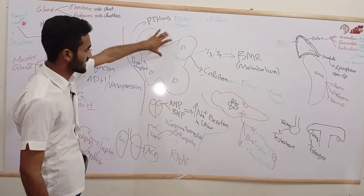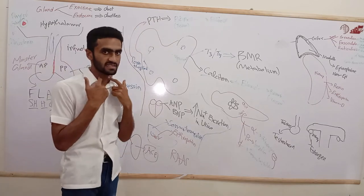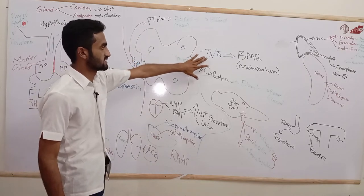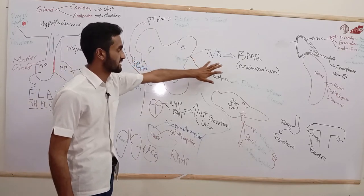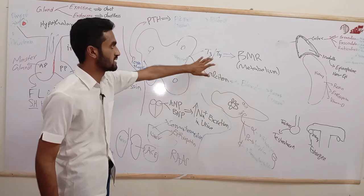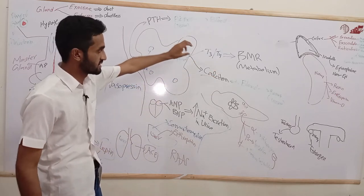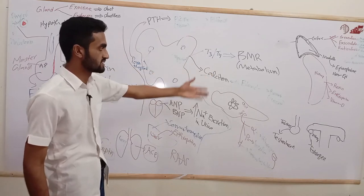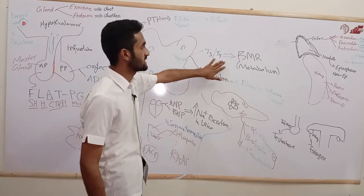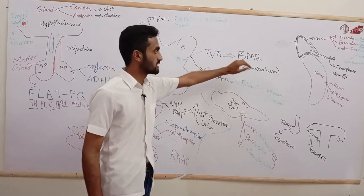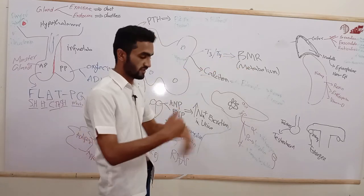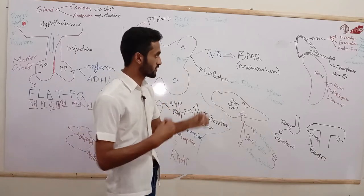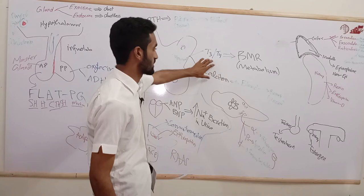Now the thyroid gland, located in the neck region, secretes two types of hormones: T3/T4 and calcitonin. Histologically, different cells are responsible for each secretion. T3/T4 mainly control the basic metabolic rate — including metabolism, gluconeogenesis, proteolysis, and lipolysis.